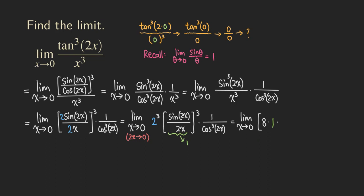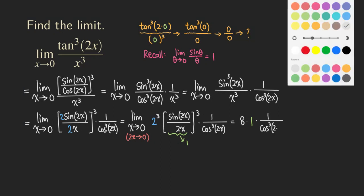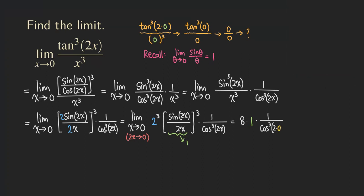We don't need the limit notation anymore. So that's 8, coming from 2 cubed, times 1, from the sine limit. What about the cosine cubed? If you plug 0 in there, we get 1 over cosine cubed of 2 times 0, which is 1 over cosine cubed of 0, and cosine of 0 is 1. So we're getting 1 over 1, which is just 1. The final answer is 8, because it's 8 times 1 times 1.